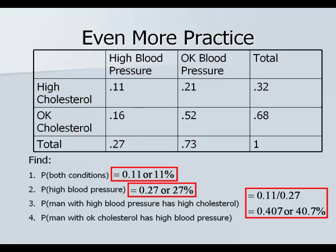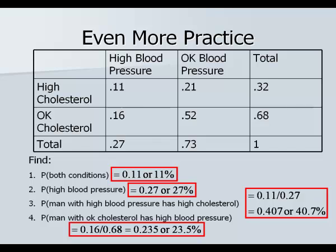Number four: the probability that a man with okay cholesterol has high blood pressure. Given he has okay cholesterol, the probability of both okay cholesterol and high blood pressure is 0.16, divided by the given probability of okay cholesterol, which is 0.68. Dividing 0.16 by 0.68 gives 0.235 or 23.5 percent.